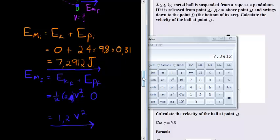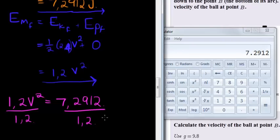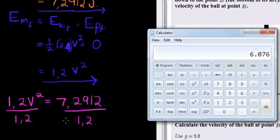Now that is my mechanical energy and that must be equal to my final mechanical energy. So I have 1.2 velocity squared is equal to 7.2912. Divide both sides by 1.2, divide by 1.2, and what do I get? Divide this value by 1.2.